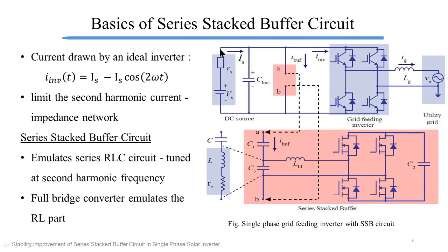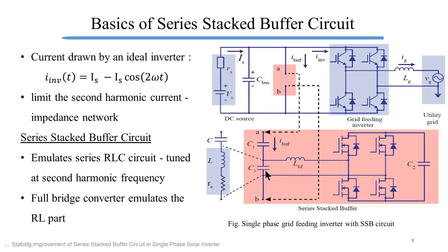This is the circuit under study. We are representing the PV array in terms of its Thevenin equivalent ideal voltage source VS in series with small signal equivalent series resistance RS. Then we have filter capacitor CBUS for high frequency filtering. Then we have our series stacked buffer or SSB circuit connected between two terminals A and B. We have a series blocking capacitor C1, then a low voltage rated full bridge converter. We have capacitor C2 which is the DC link of full bridge converter, and LPF and C3 which is the filter of the full bridge converter.